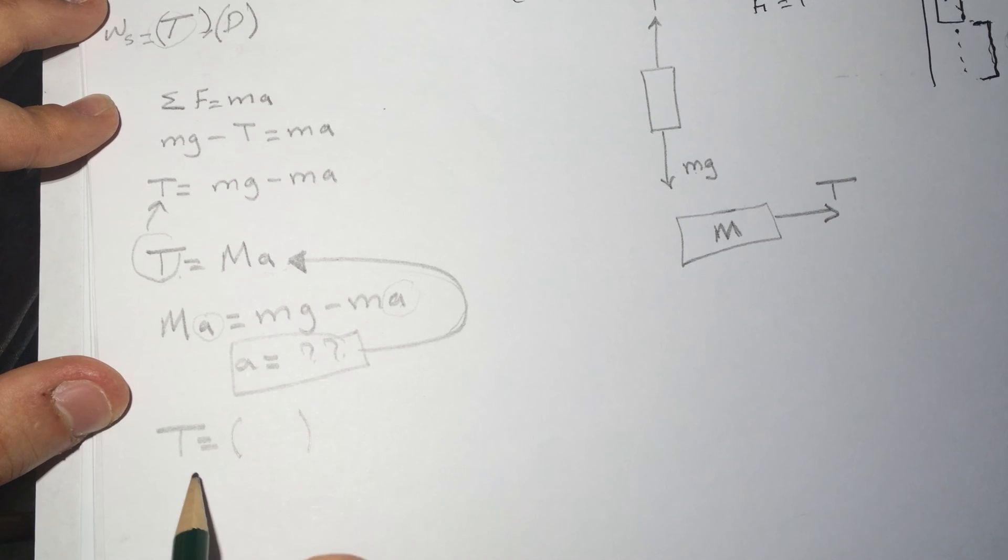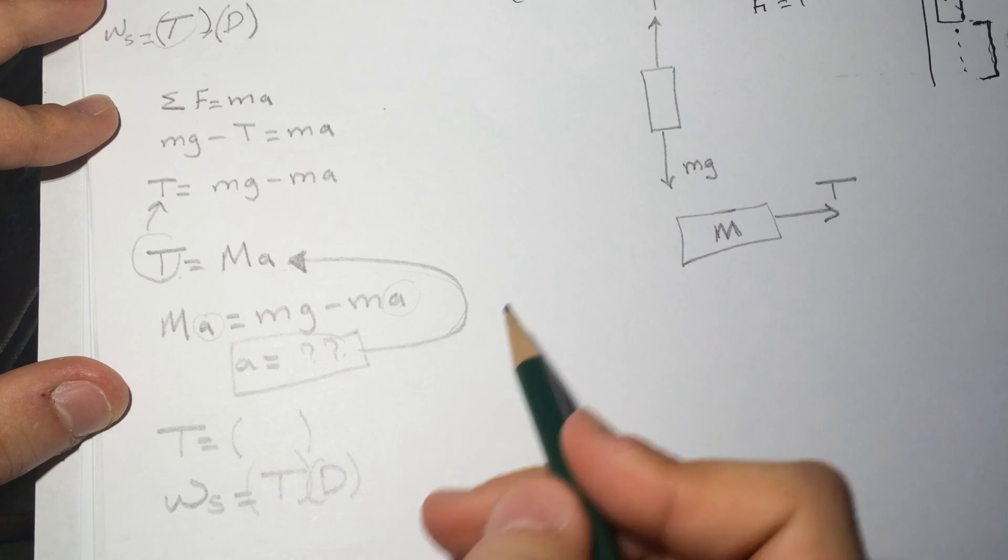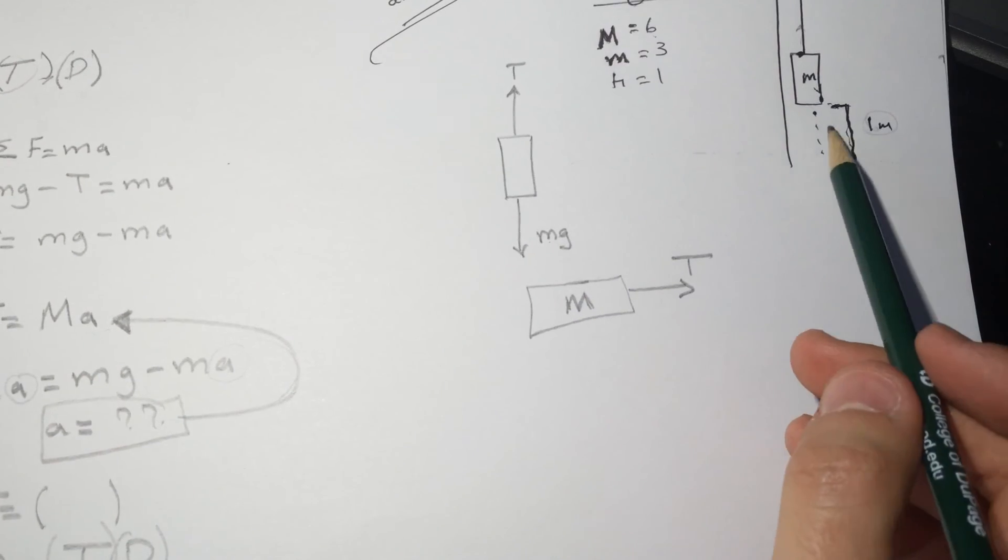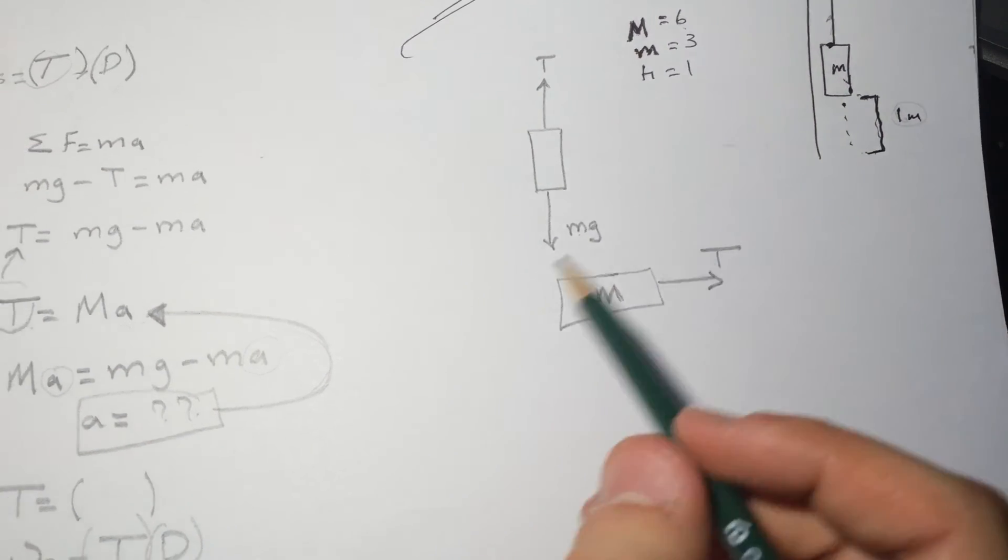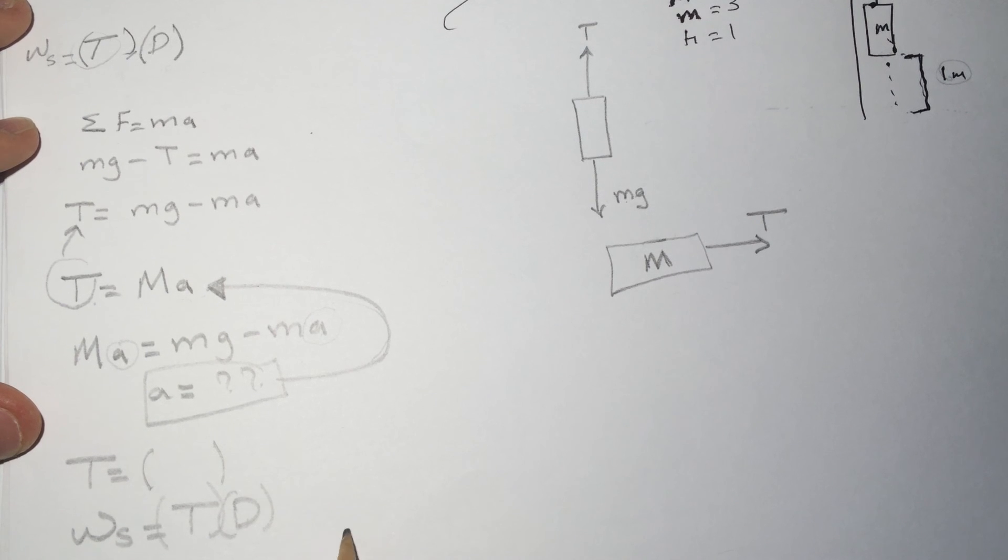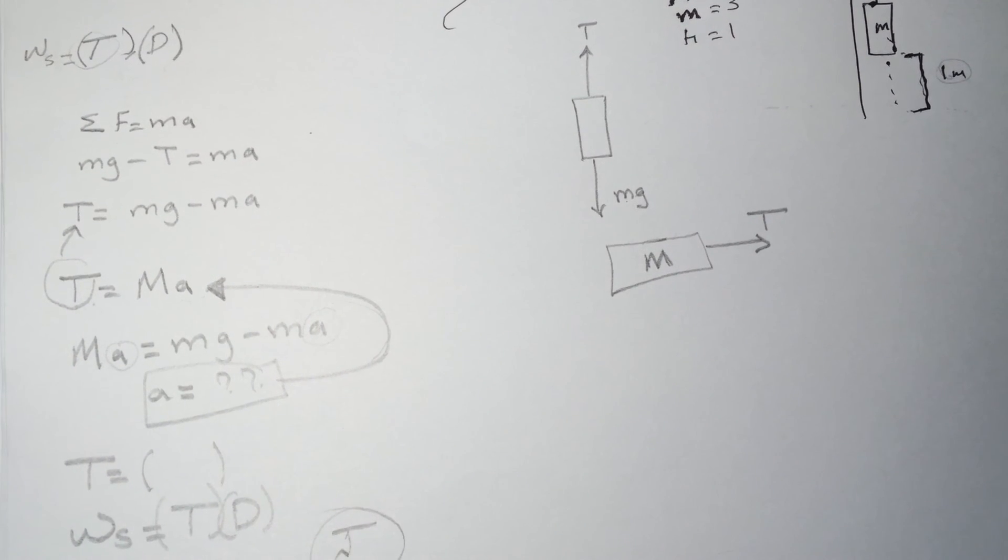Then when you get the tension, the work for the string will be equal to T times D. D is the distance that this mass has fallen, which is the work done, and your value will be in joules. So hope it helps and good luck.